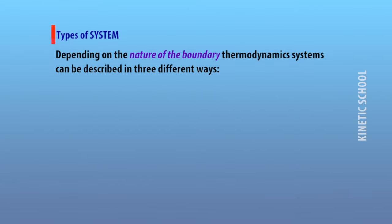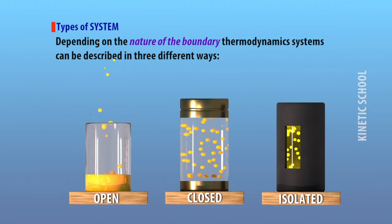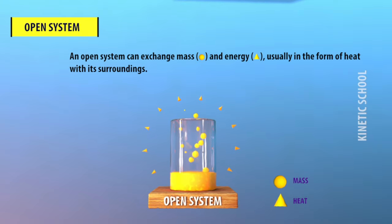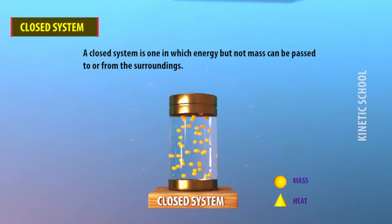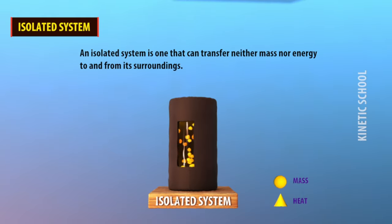Depending on the nature of the boundary, thermodynamic systems can be described in three different ways. An open system can exchange mass and energy, usually in the form of heat, with its surroundings. A closed system is one in which energy but not mass can be passed to or from the surroundings. An isolated system is one that can transfer neither mass nor energy to and from its surroundings.